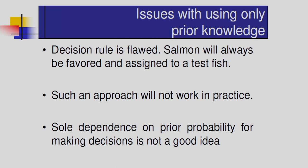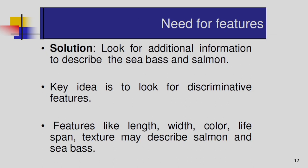However, this decision rule is not a good rule — it is a flawed rule — because salmon will always be favored and assigned to a test fish. We are only considering the prior information, so the classification is not accurate. We have to consider some additional information for accurate decision making. Maybe we can consider other features such as the length of the fish, the width, the color, the lifespan, and texture — and based on these measurements we can do accurate classification.